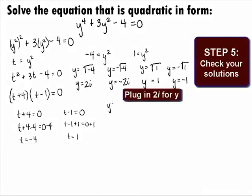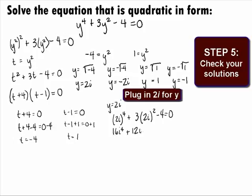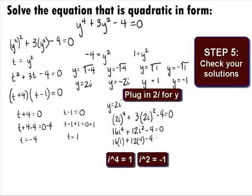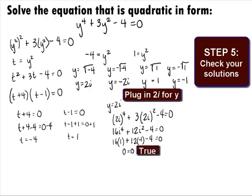Plugging 2i in for y into the original equation, we get 2i raised to the 4th power plus 3 times 2i raised to the 2nd power minus 4 equals 0. Simplifying, we get 16i to the 4th plus 12i squared minus 4 equals 0, which becomes 16 times 1 plus 12 times negative 1 minus 4 equals 0, which simplifies to 0 equals 0. Since this is a true statement, y equals 2i is a solution.